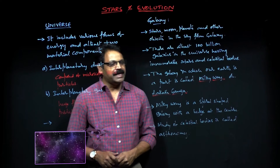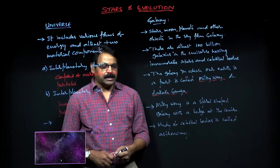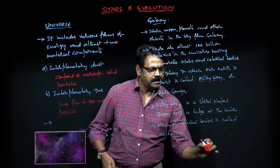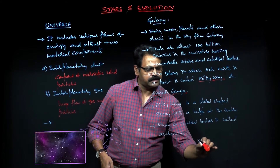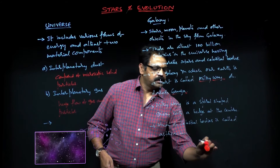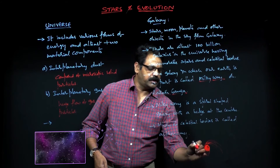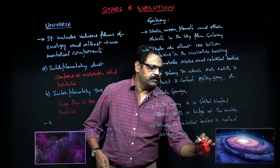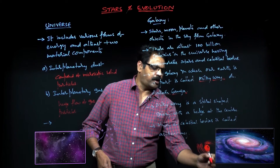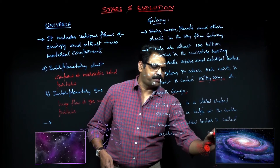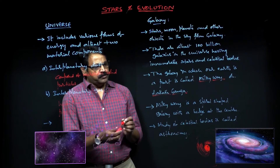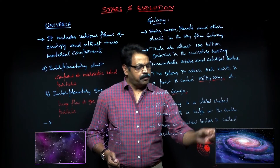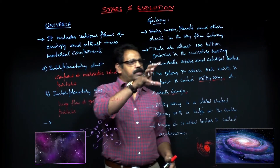The Milky Way has a bulge at the center and spirals going around it. You can look at the animation and the image shown below to get an assessment of how these spirals are arranged. The shape of the Milky Way is a spiral shape with a bulge at the center.